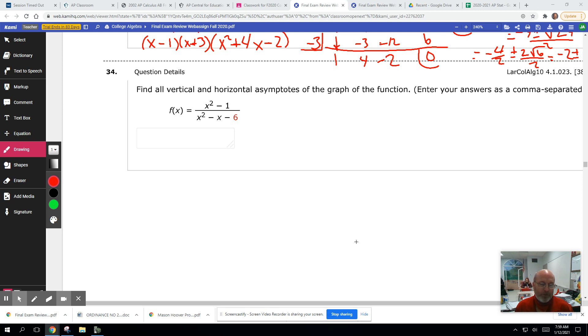Okay, UALR final exam review for college algebra problem number 34. Find all vertical and horizontal asymptotes of the graph of the function.